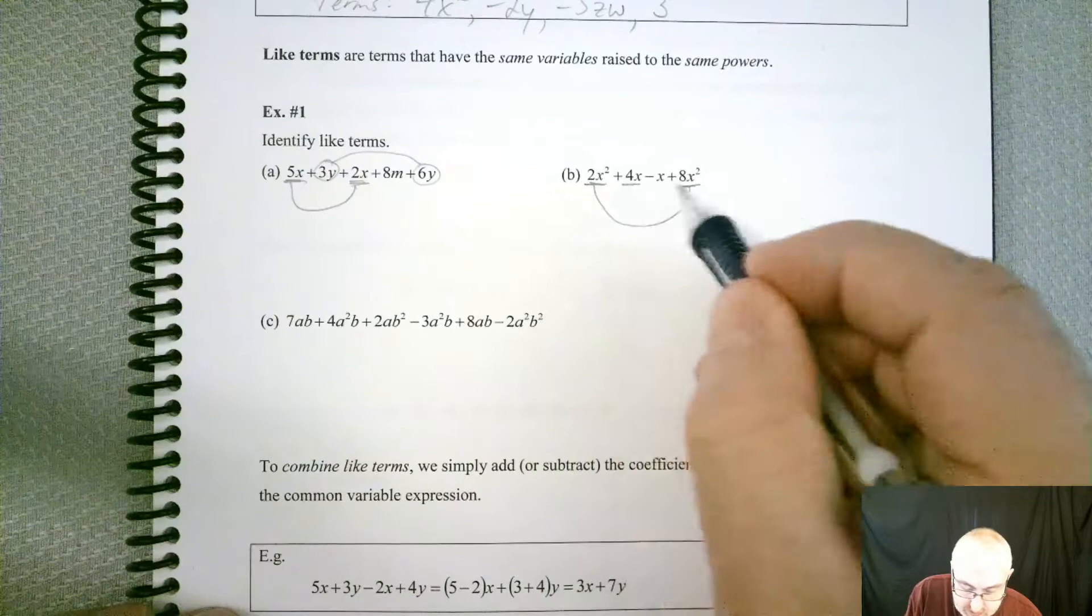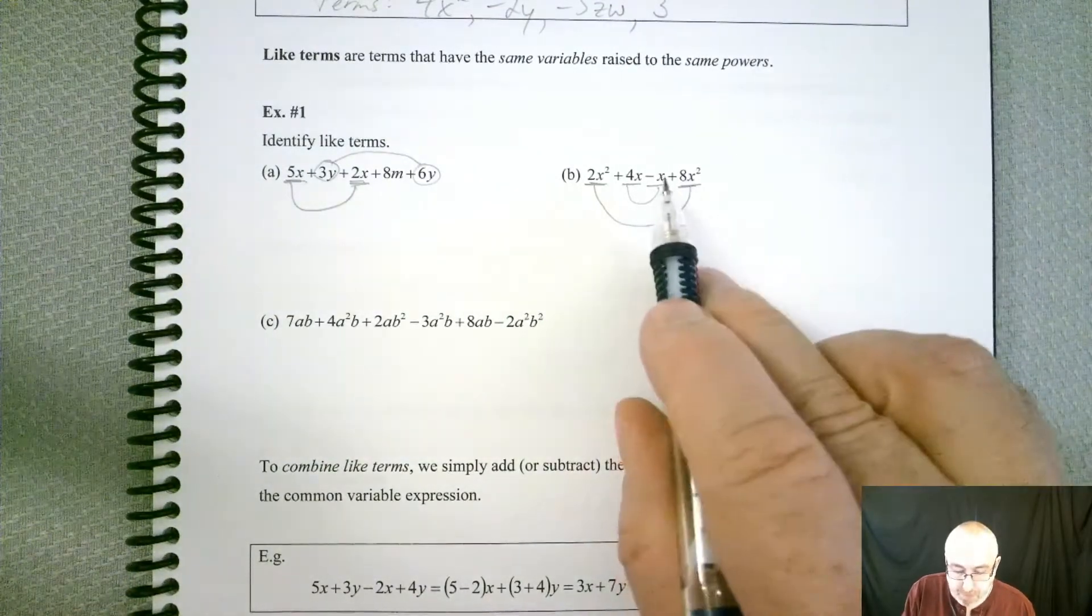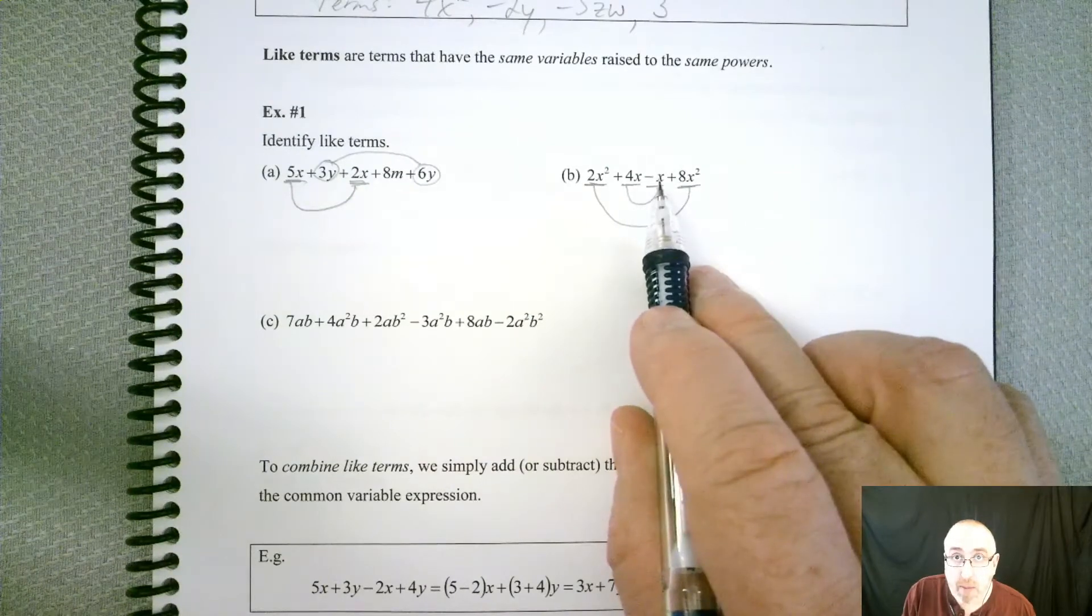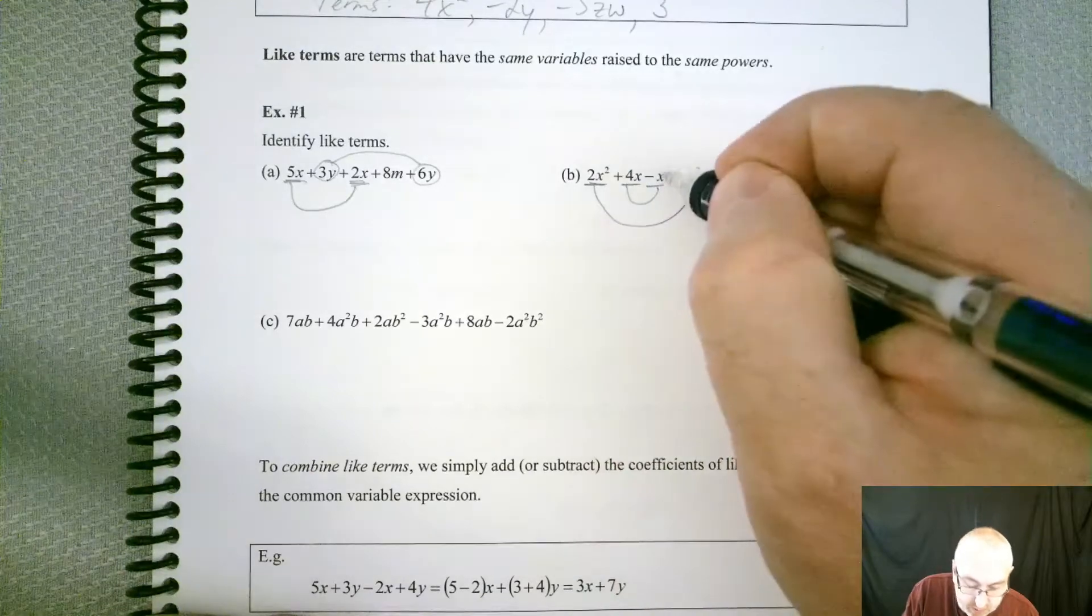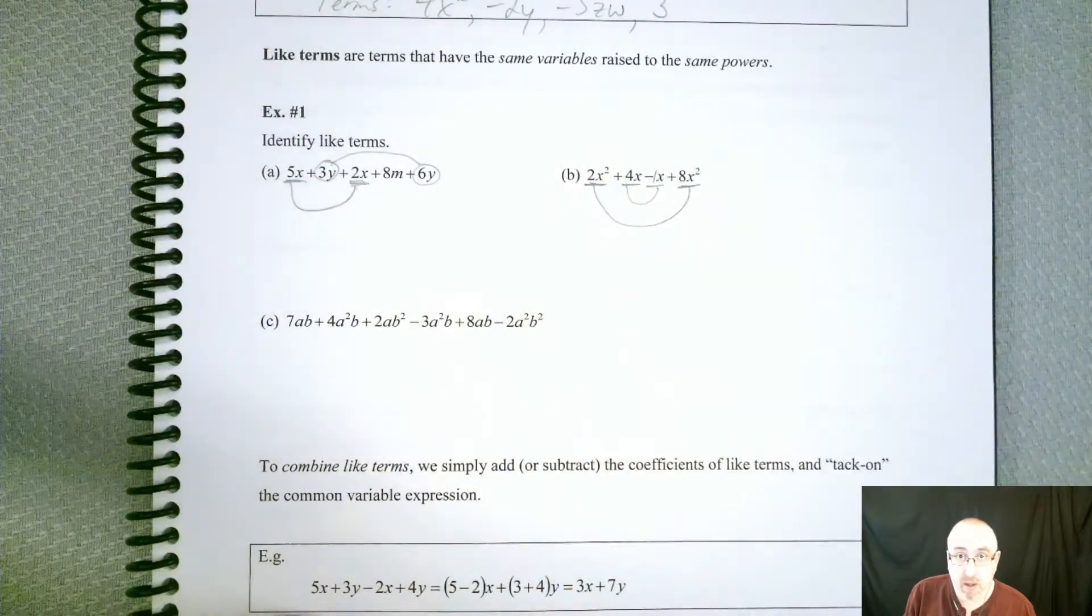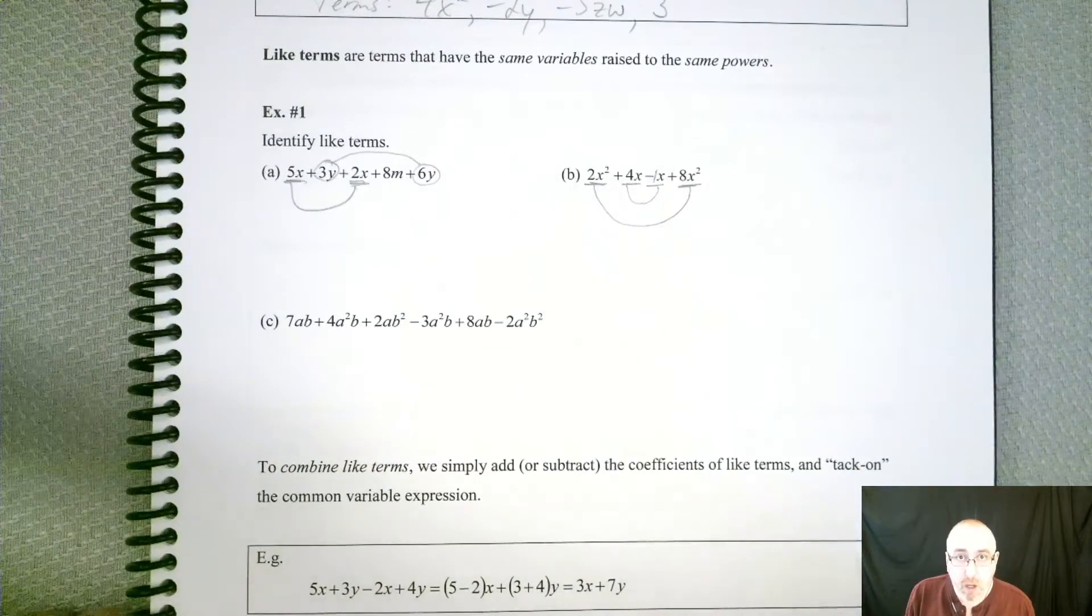Likewise, 4x and a minus x are going to go together as well. Now, just because this x is all by itself, remember it does have a coefficient. And that coefficient is 1. So we're going to need to know that later on.